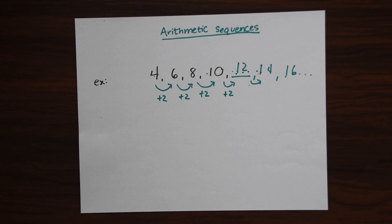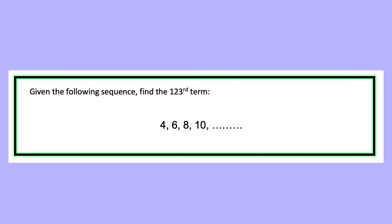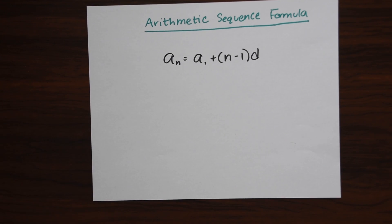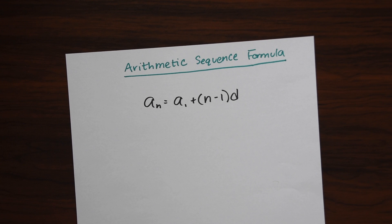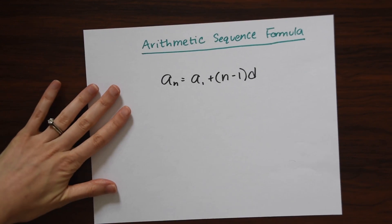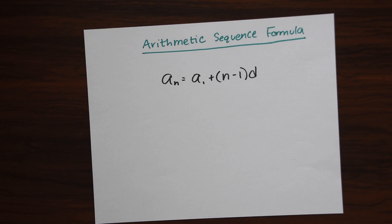But what if we wanted to know the 123rd term? How would we find that? So that's where the arithmetic sequence formula comes in. The arithmetic sequence formula would be able to tell us, without solving each term up to the 123rd term, what that would be.